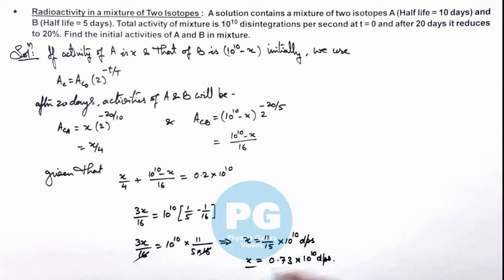This is the initial activity of A, that is one result of the problem. And here, this implies activity of B is 10^10 minus x, which is equal to 0.27 into 10^10 dps. This is another result of the problem. So this is the initial activity of A, and this is the initial activity of B, which we are required to find in the problem.